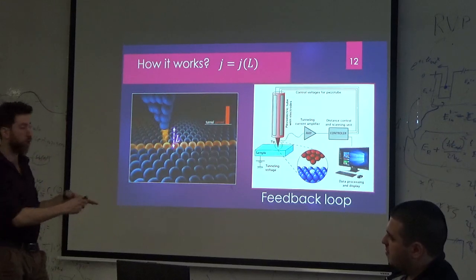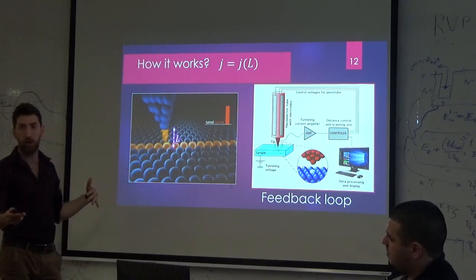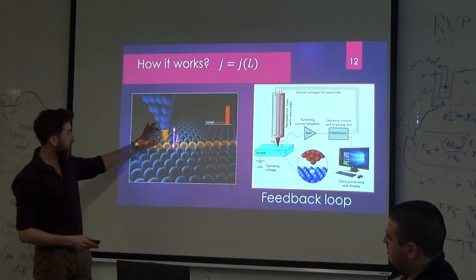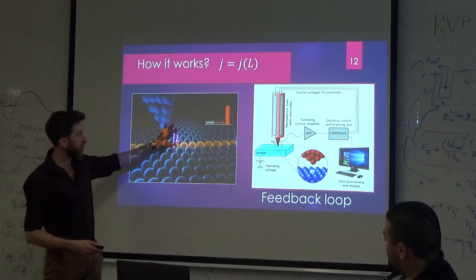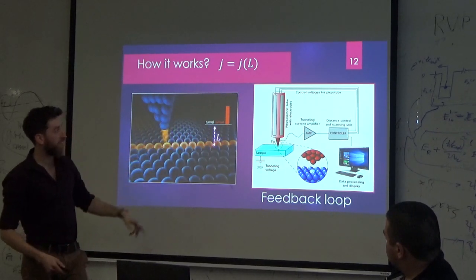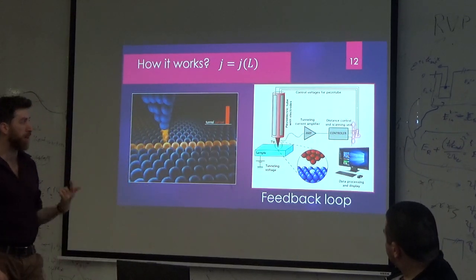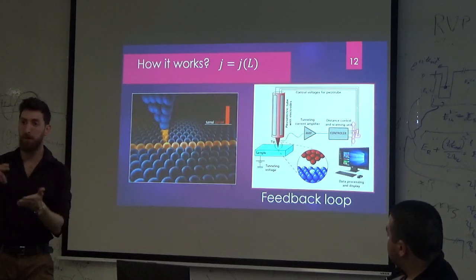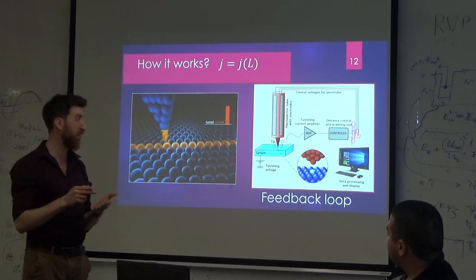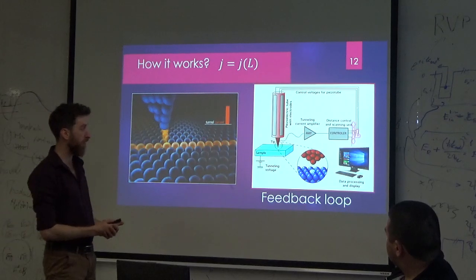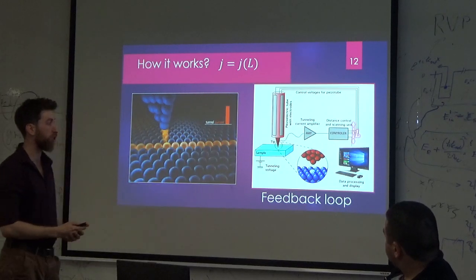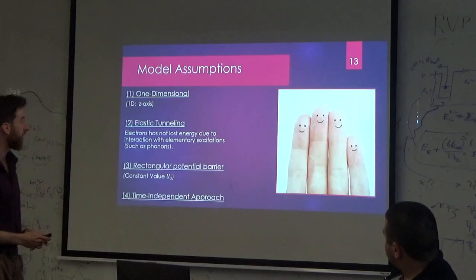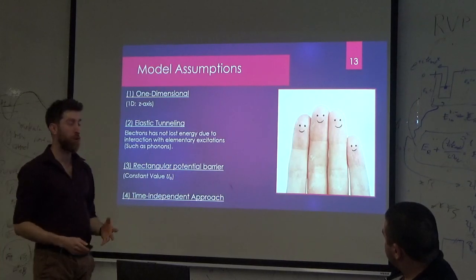The length changes from place to place — this is a generic example where the same atom goes all along, but it can be a really different and complex surface. So L is changing, and we put it in a feedback loop. From the changing of the barrier length, we can anticipate how the sample looks by processing it through a controller.